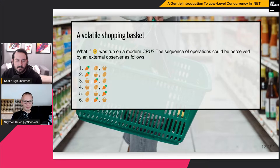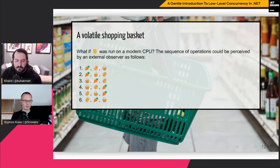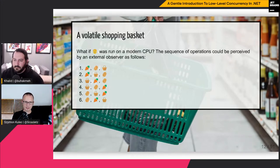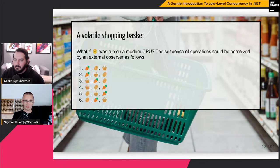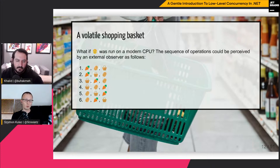Depending on your CPU, compiler, and framework — and this applies to .NET as well as C++ with various compilation options — the execution for an external observer could be totally different. For example: carrot added, potato added, basket marked ready. But also: carrot added, basket marked ready, then potato added. All these different orderings are possible from an external observer's perspective, even though at the end all properties are matched — the carrot is there, the potato is there, and the basket is ready.